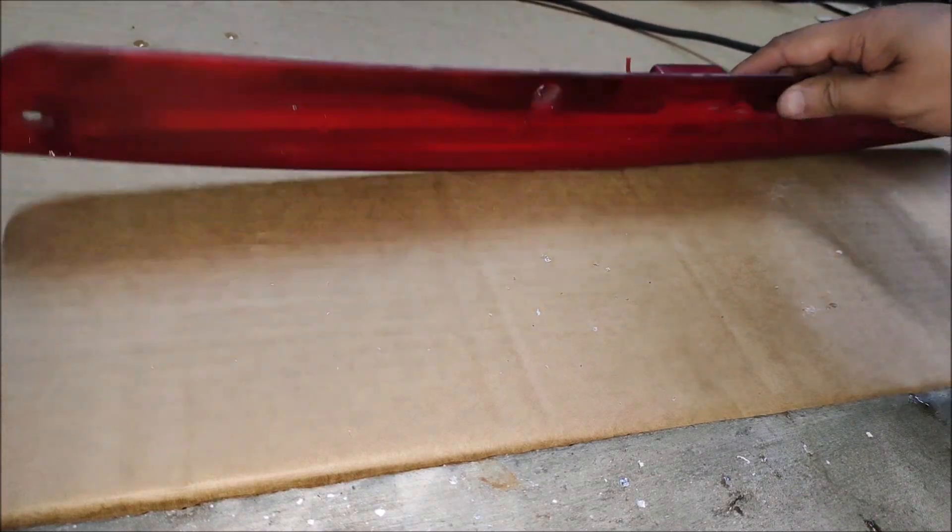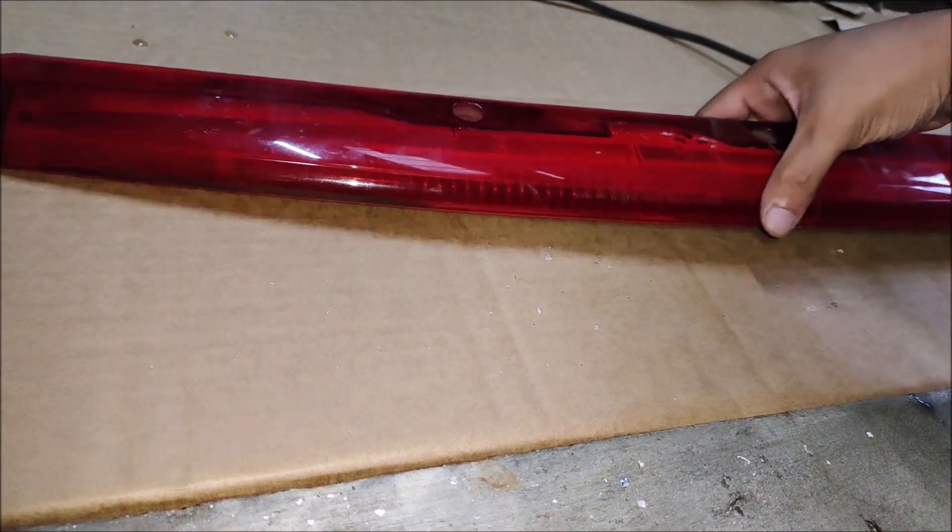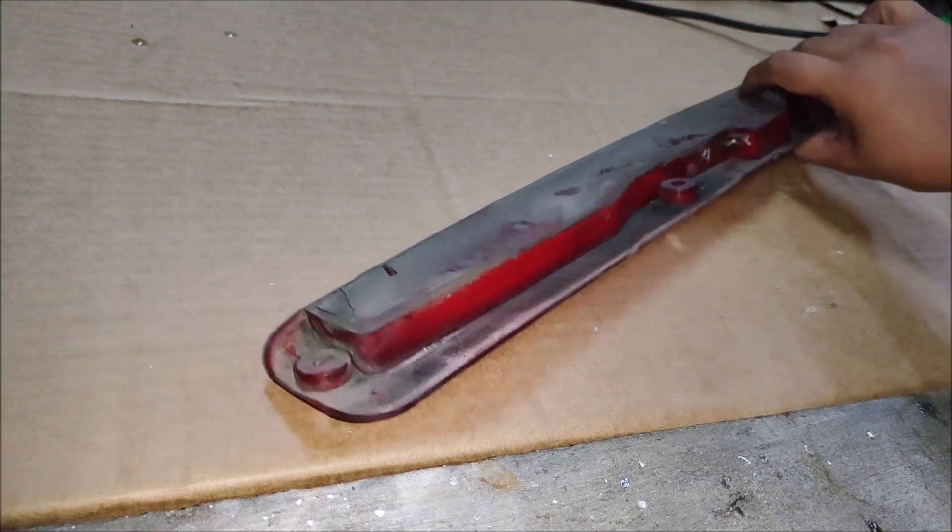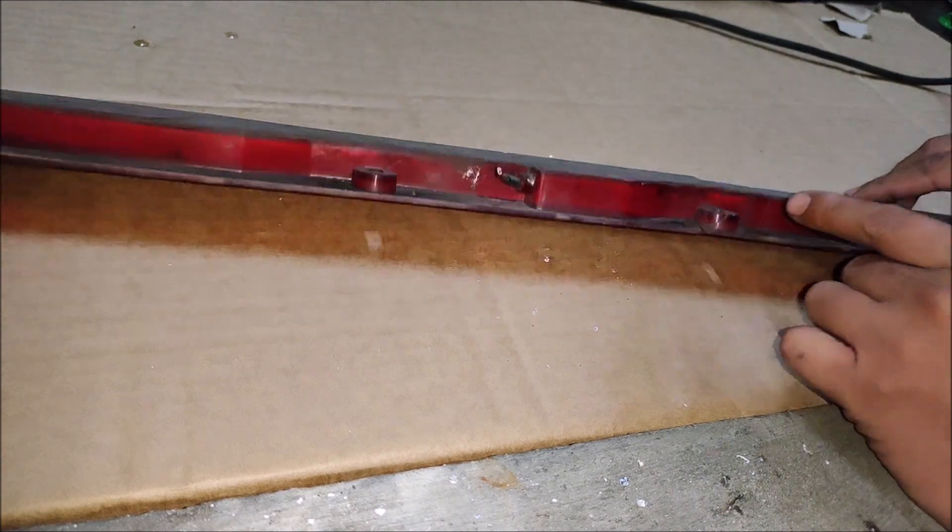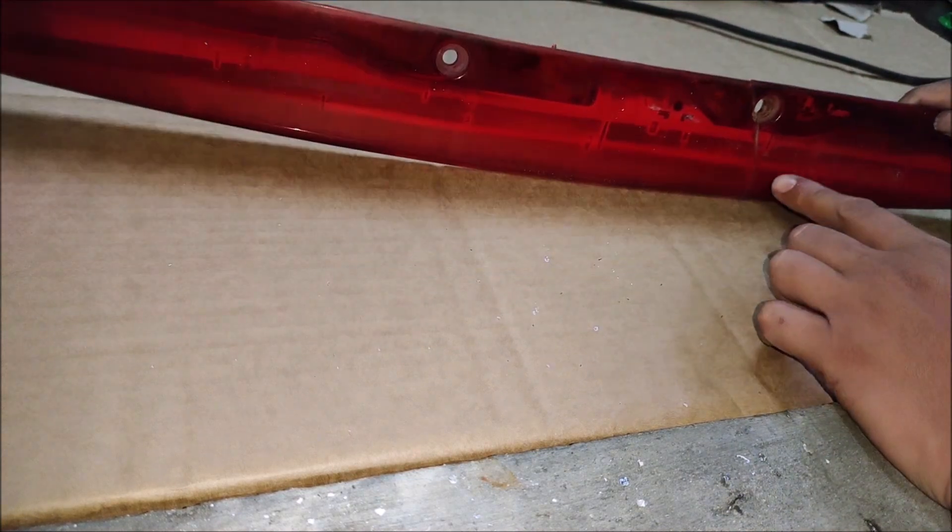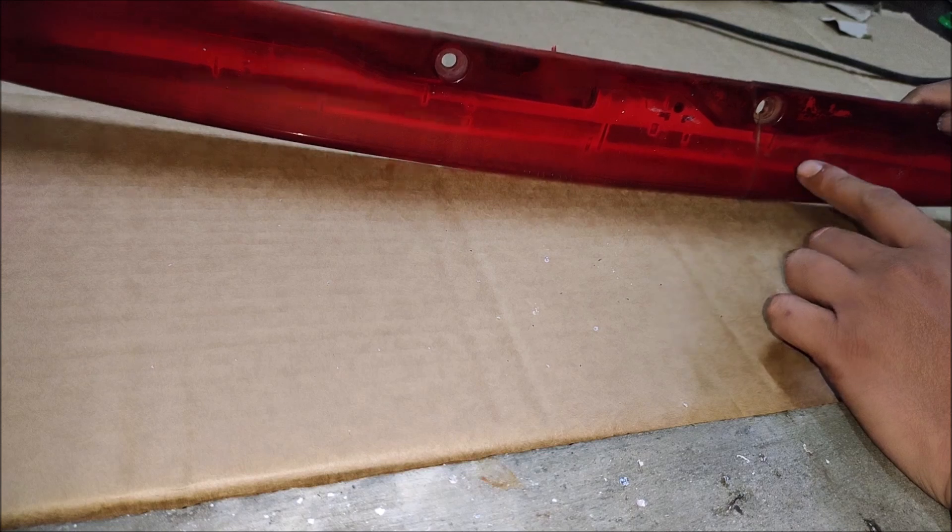So this is the Mazda Speed Mazda Familia rear wing third brake light. As you'll see, there's a crack here. And the inside is already contaminated because of the crack.